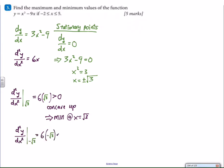Similarly, at negative square root of 3, we get a negative value. The graph is concave down, which means there's a maximum at x equals negative square root of 3, sorry.